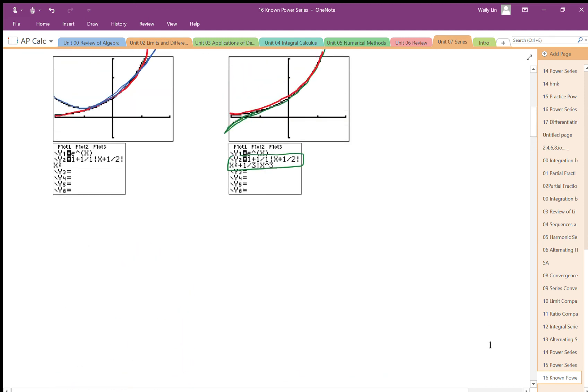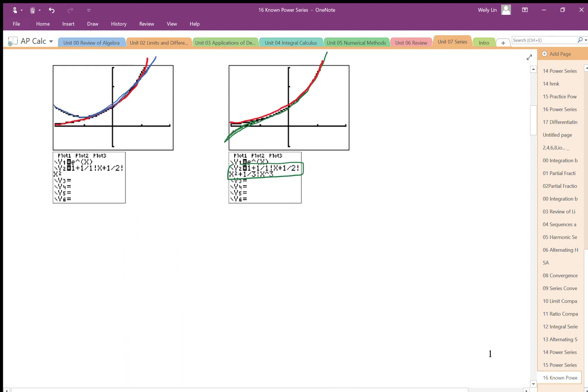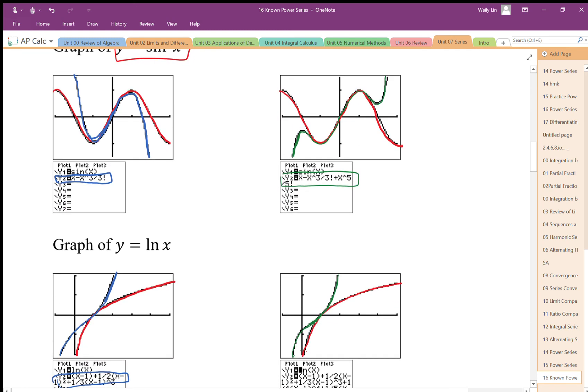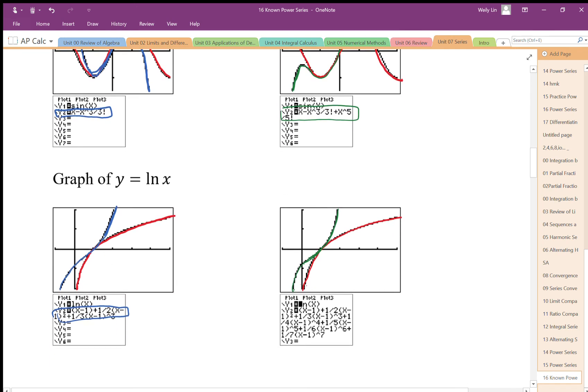Sine x and e to the x, the graphs start matching the polynomial graphs, so the series expansions start matching the graphs very quickly.